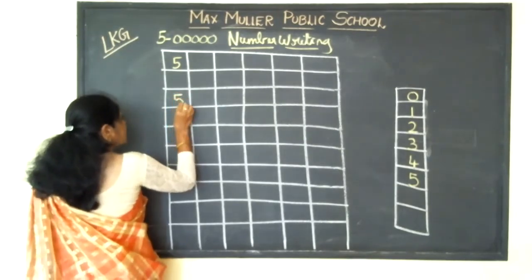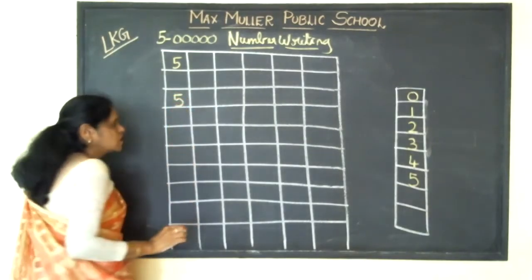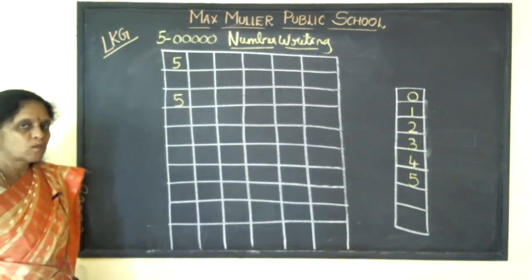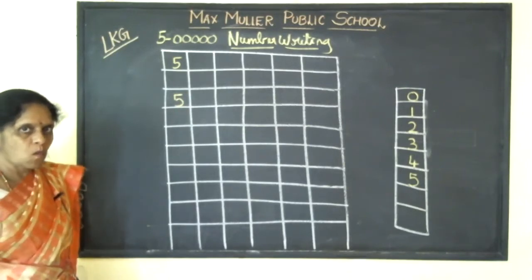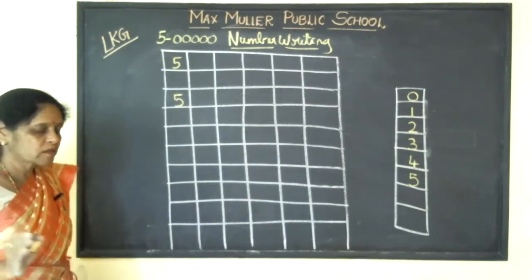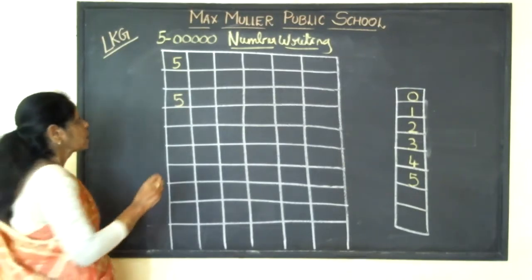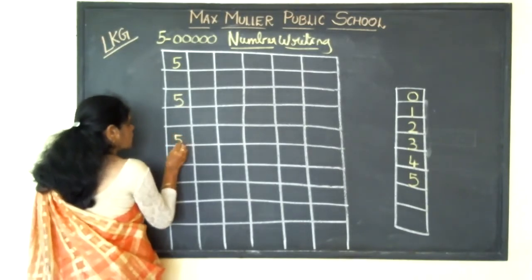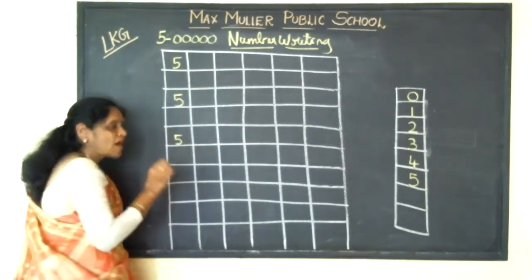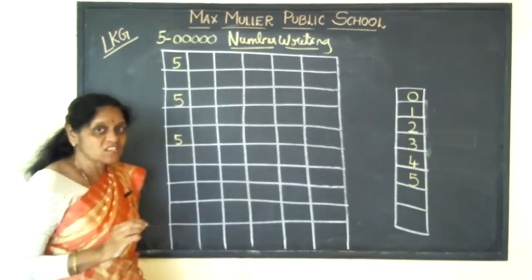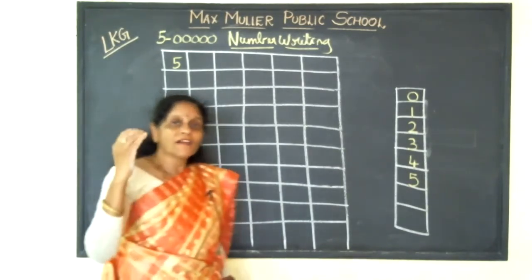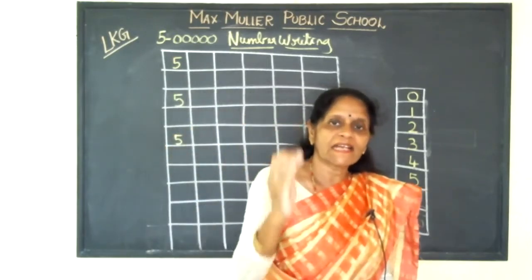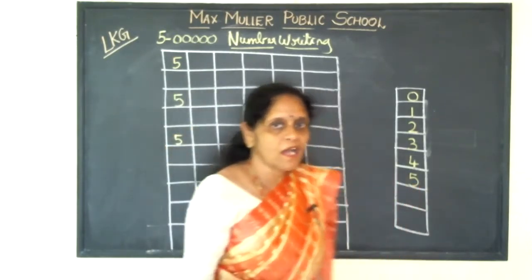You should write inside the box, children. Write one time in classwork and one time in homework. Five. Five — this you have to write in the classwork. What I give you in the homework, you have to write that in the homework.